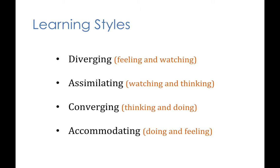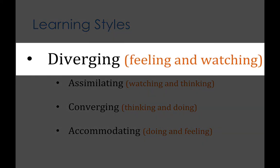Based on this, Kolb has derived four distinct learning styles. The first is the diverging learning style, based on feeling and watching. People with this learning style prefer to watch rather than do and like to look at new experiences from different perspectives. For them, other people and their views are very important.